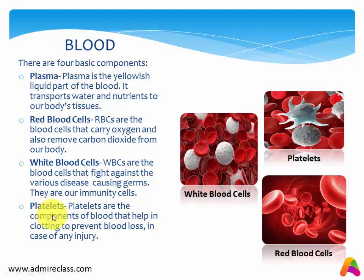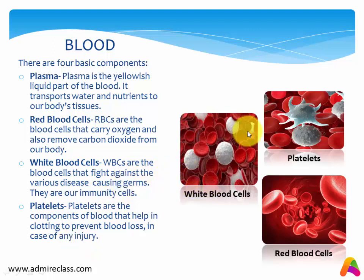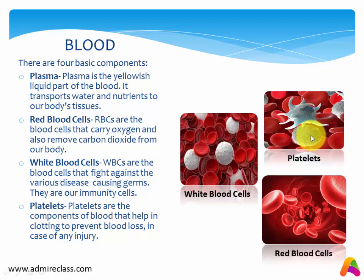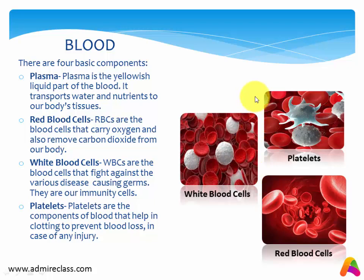The last one is platelets. These are the components of blood that help in clotting to prevent blood loss in case of any injury. You can see the picture — these are the white blood cells which are our immunity cells, these are the platelets which help in clotting, and these are the red blood cells that carry oxygen and remove carbon dioxide from our body.